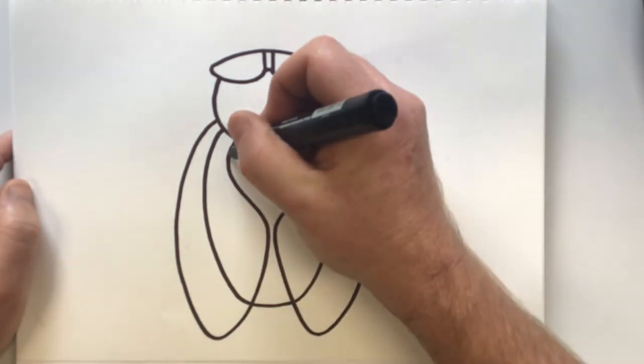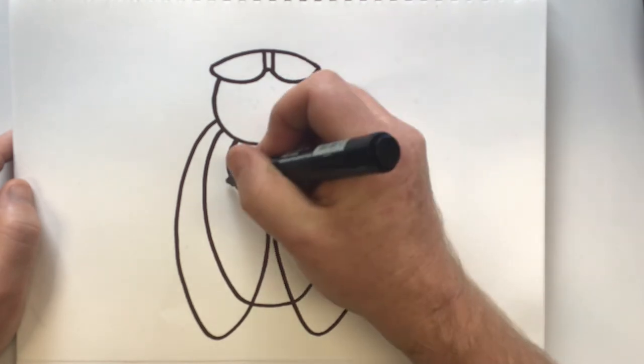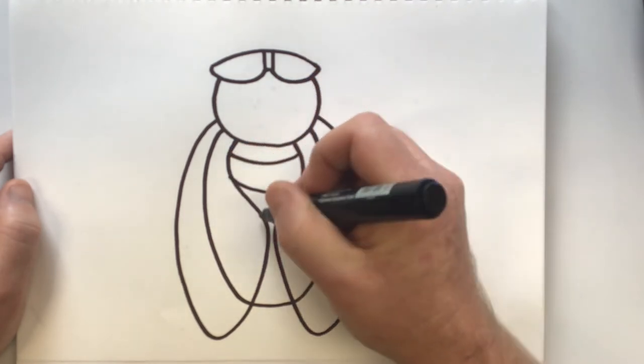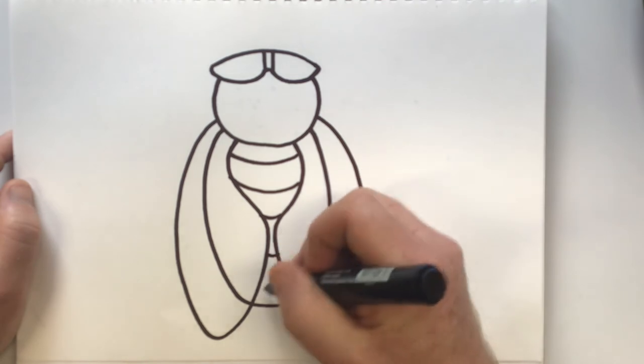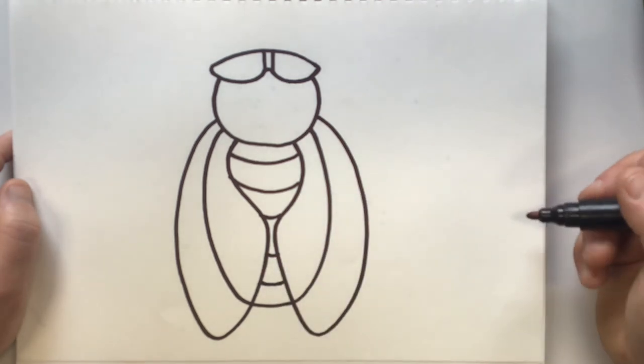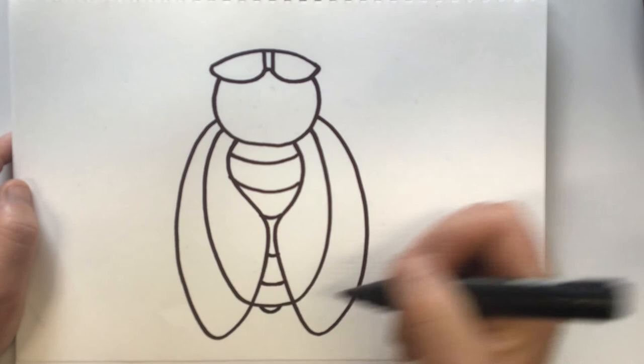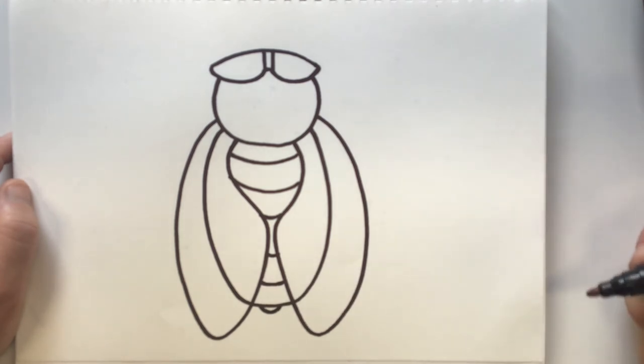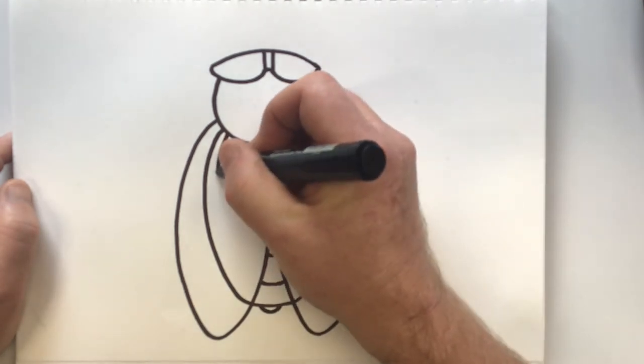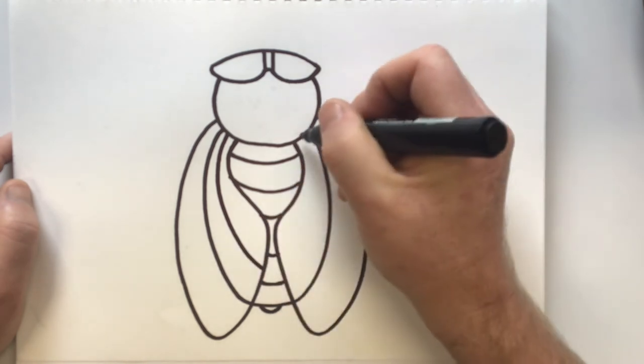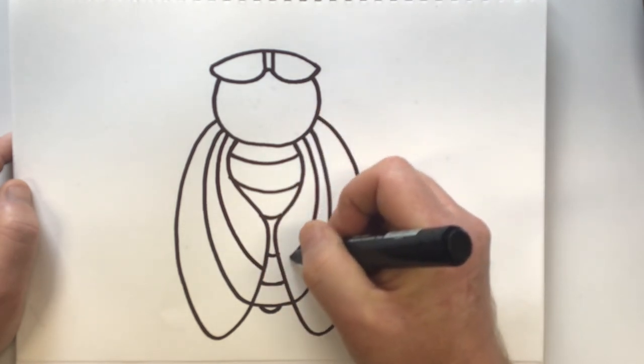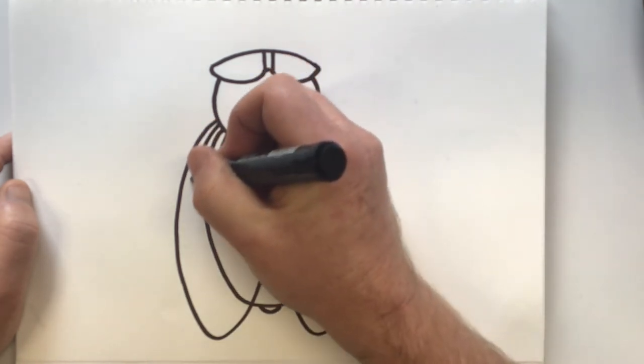Okay, I'm going to draw some lines on his body. Just like that. Let's put a little bottom on him too. I'm just going to add some lines into my wings now. Let's do a line here. Now let's do another line that comes down here.